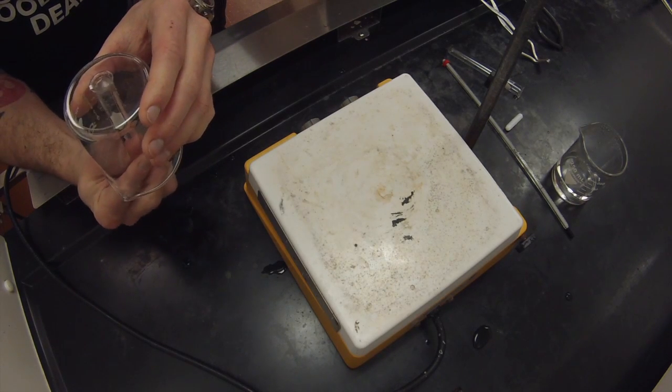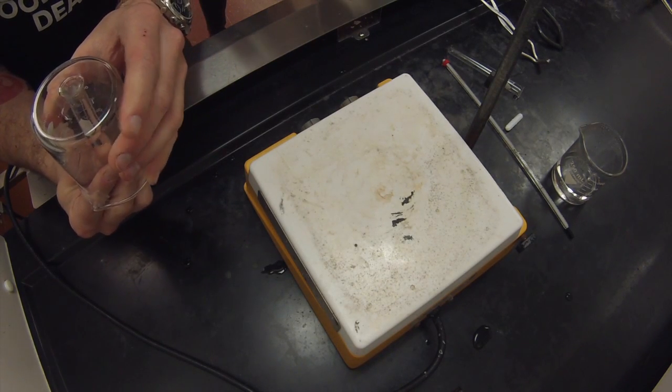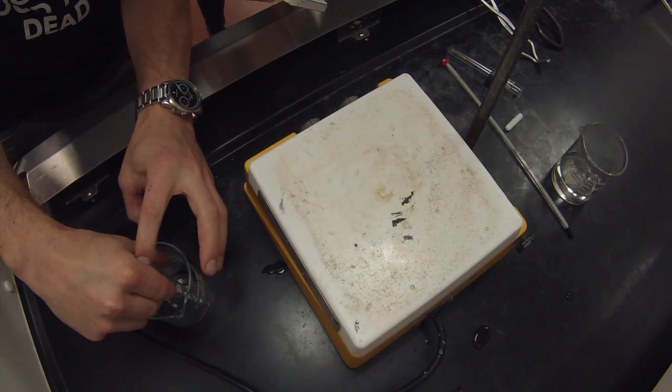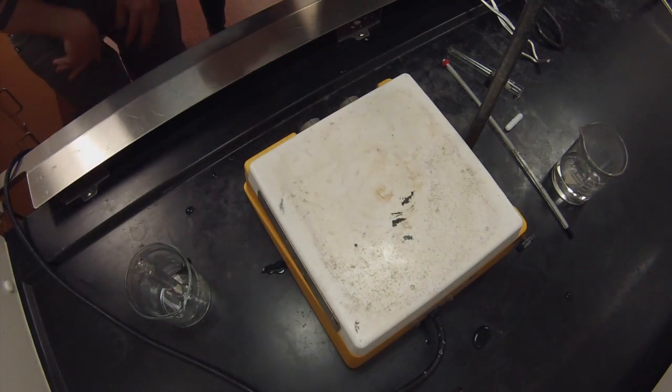Next, place a beaker over the test tube and very quickly invert both the test tube and the beaker. Again, try to prevent any water from leaking out. Afterwards, your setup should look something like this.